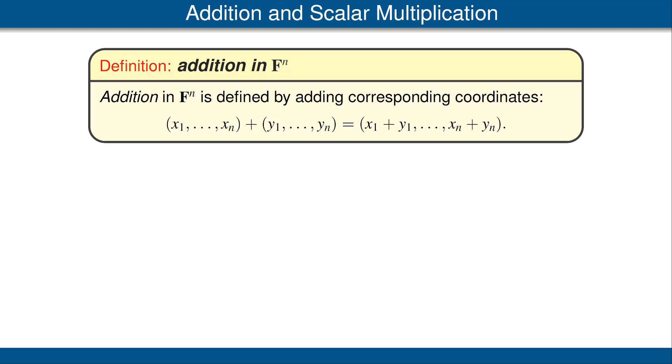We define the sum of two elements of F^n by adding the corresponding coordinates, as shown here. For example, here is the sum of two elements of R⁴.